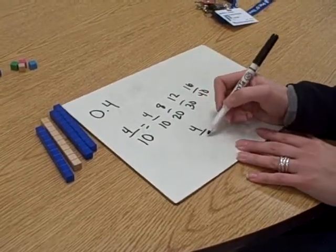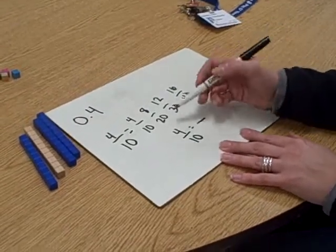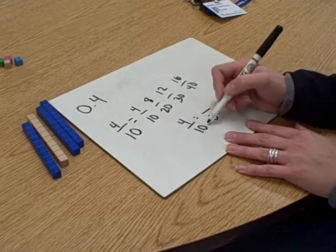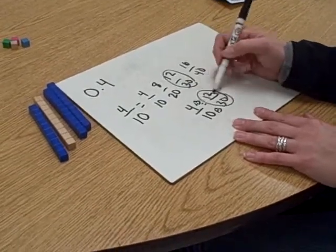Or you could do four tenths is equal to, pick whatever you want to do, how many thirtieths? Ten times three. Four times three equals twelve. They're the same.